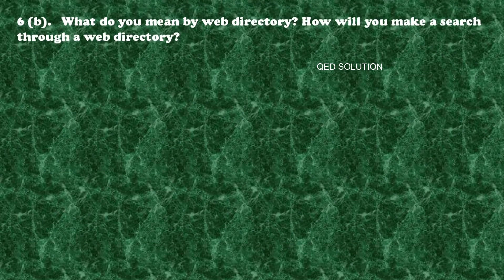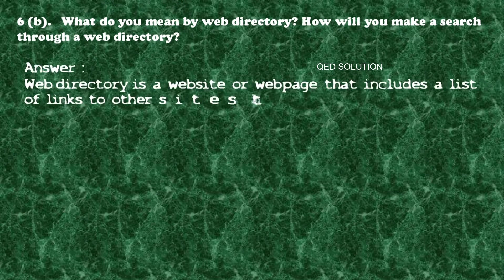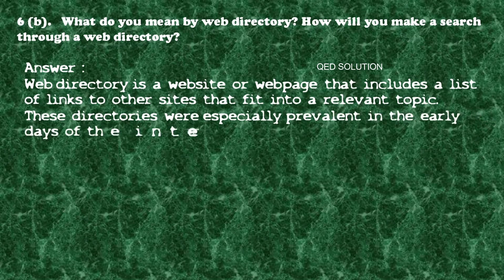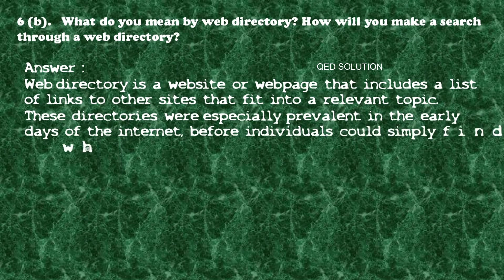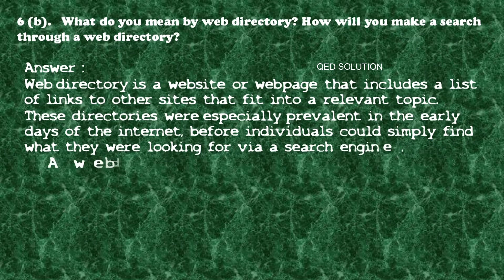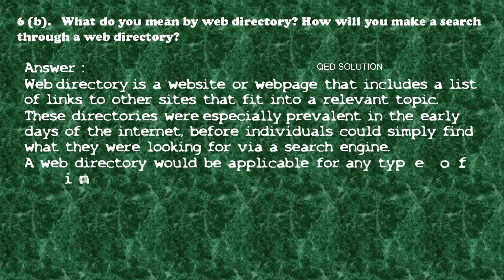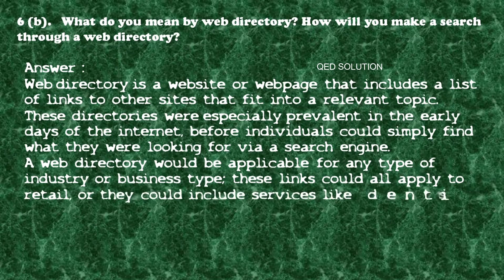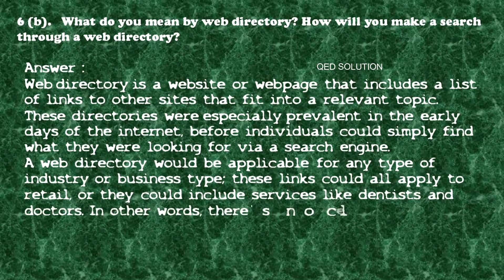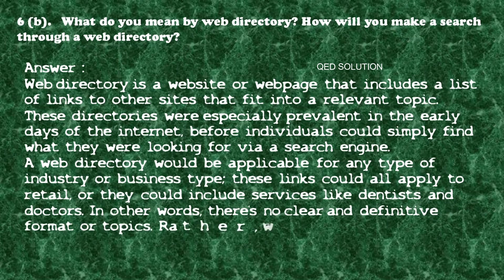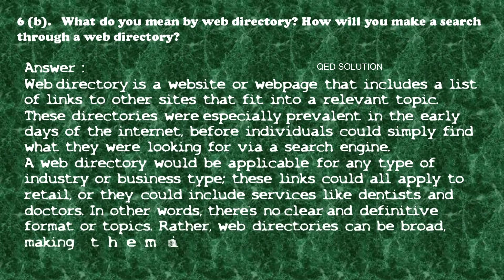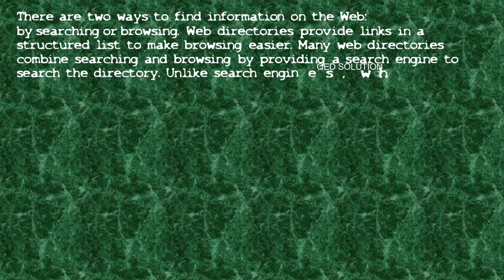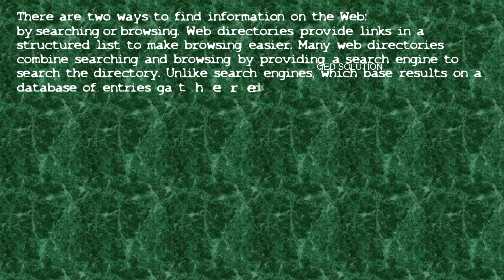Question number six (b): What do you mean by web directory? How will you make a search through a web directory? Answer: A web directory is a website or web page that includes a list of links to other sites that fit into a relevant topic. These directories were especially prevalent in the early days of the internet before individuals could find what they were looking for via a search engine. A web directory can apply to any type of industry or business, such as retail or services like dentists and doctors. There are two ways to find information on the web: by searching or browsing.